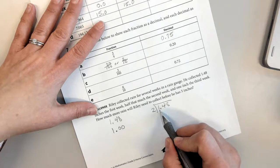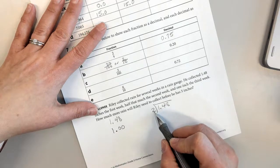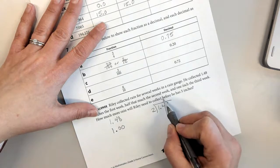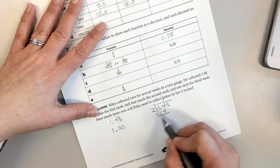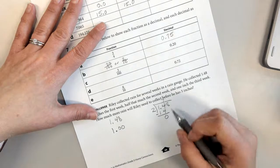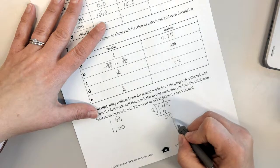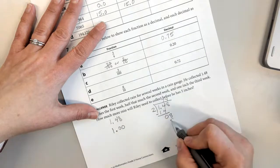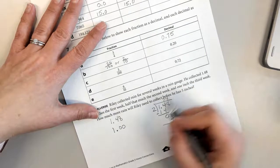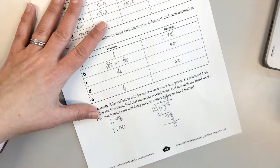Two goes into one, it can't. So two goes into fourteen, seven times. Seven times two is fourteen. I subtract, and I get nothing. So I bring down my eight. Two goes into eight four times. Four times two is eight. And there's my answer. And then I have to put my decimal up here.